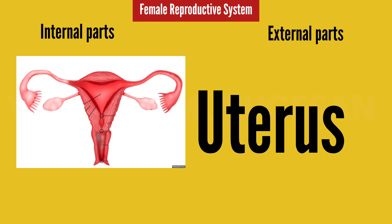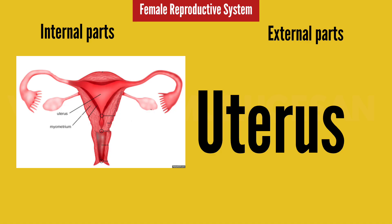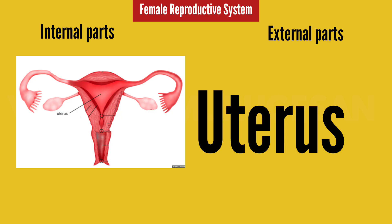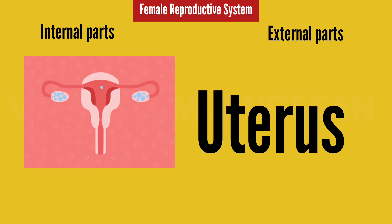Next is the Uterus. In Tamil you can say it is like a small pear. In English it is called the uterus. If you look at it, it is pear-shaped. The uterus is an important organ, and a vital step called implantation occurs here for fertilization to take place.